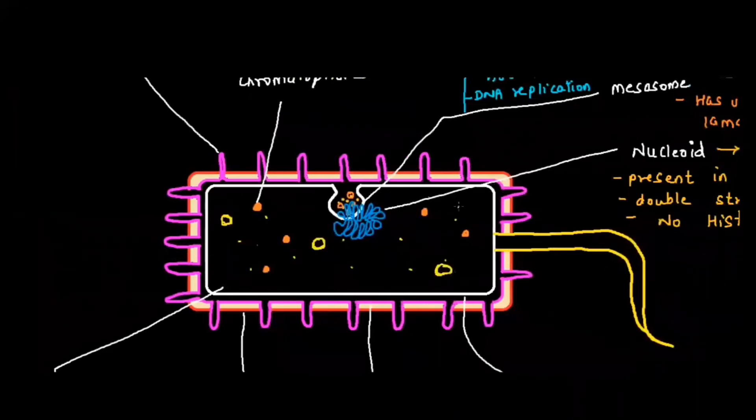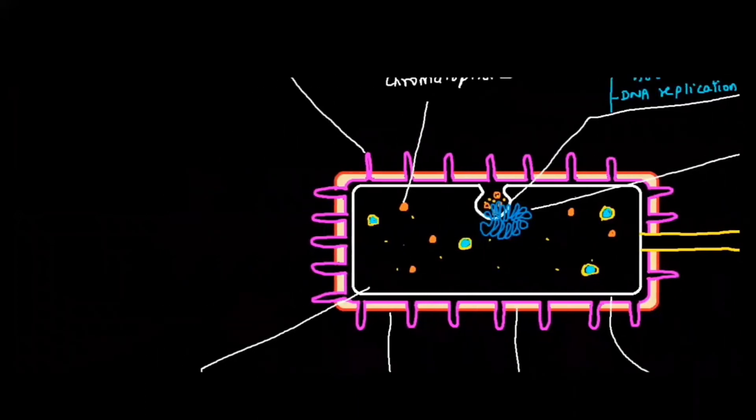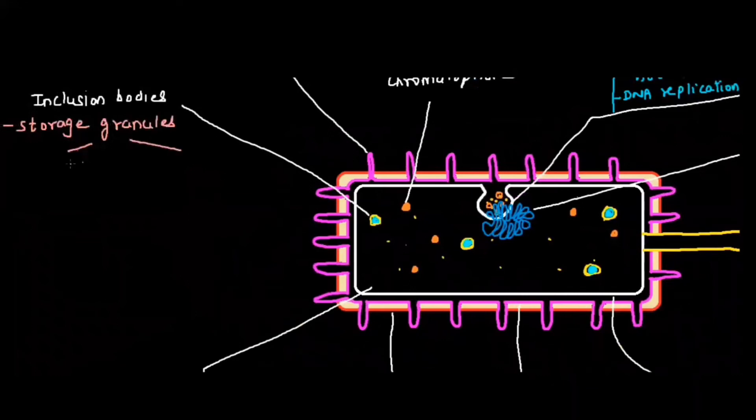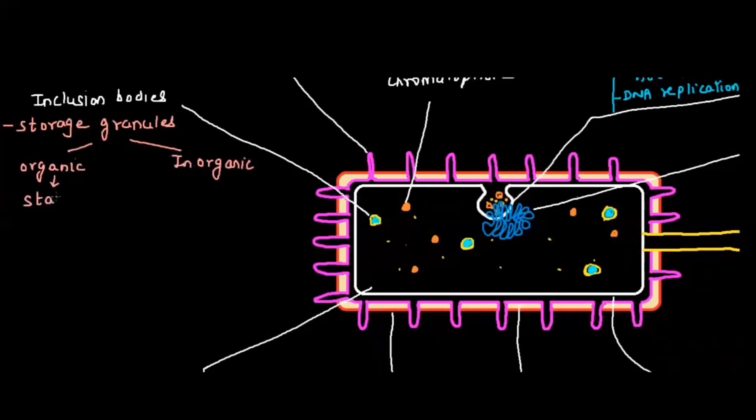The next important component in the bacterial cell is the inclusion bodies. What are inclusion bodies? Inclusion bodies consist of organic as well as inorganic components. There are storage granules present. We have organic granules and inorganic granules. Organic is composed of starch and glycogen, and inorganic is composed of phosphate and sulfate granules. These are different kinds of food storage.